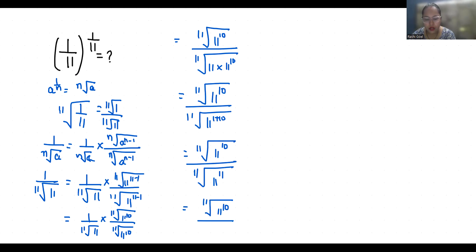And this we can write as a^(m/n). So 11^10 divided by 1, equals 11^(10 × 1/11).